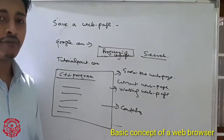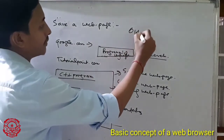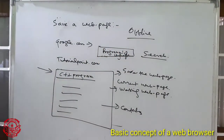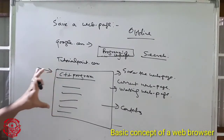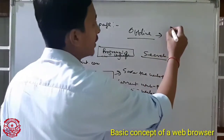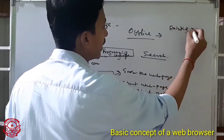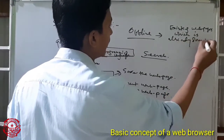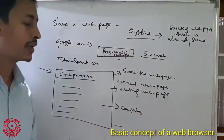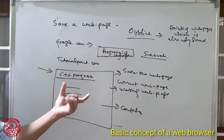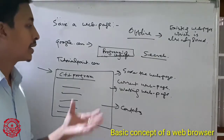There is another advantage of saving a web page to your desktop or PC. For example, if you are offline — if you are not connected to the internet — and you want to again visit these websites, you want this particular C++ program code, you can view this web page with the help of the existing web page which is already saved in your desktop or PC.